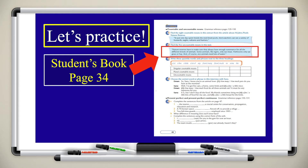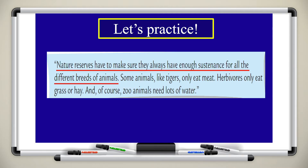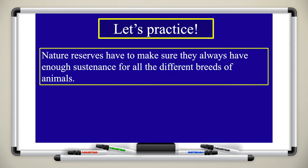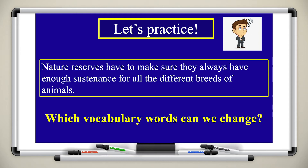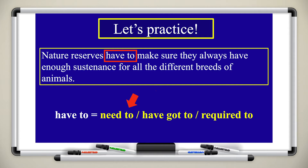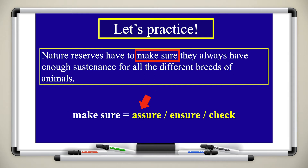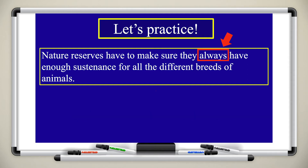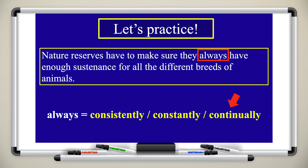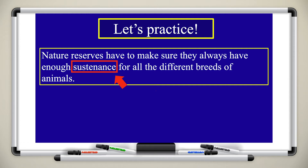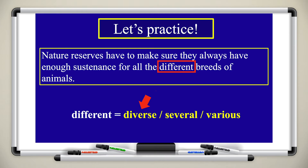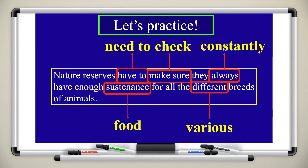Let's practice paraphrasing. Look at the student's book at page 34, the second paragraph: 'Nature reserves have to make sure they always have enough sustenance for all the different breeds of animals.' Which vocabulary words can we change? 'Have to' also means need to, have got to, or require. 'Make sure' also means assure, ensure, or check. 'Always' means consistently, constantly, and continually. 'Sustenance' could mean food or nourishment.